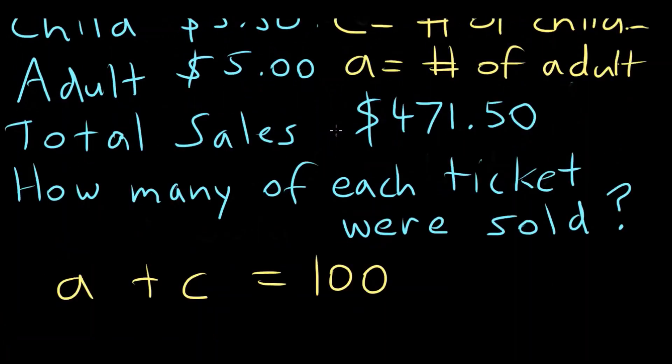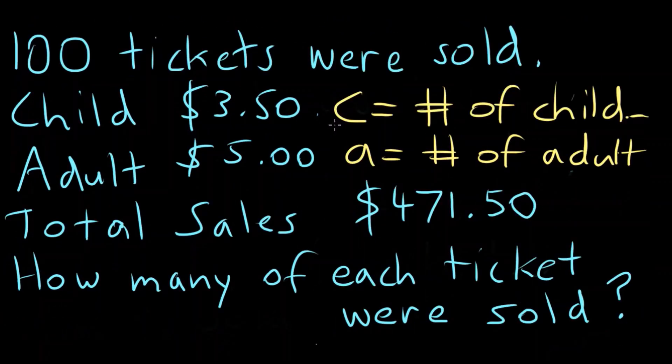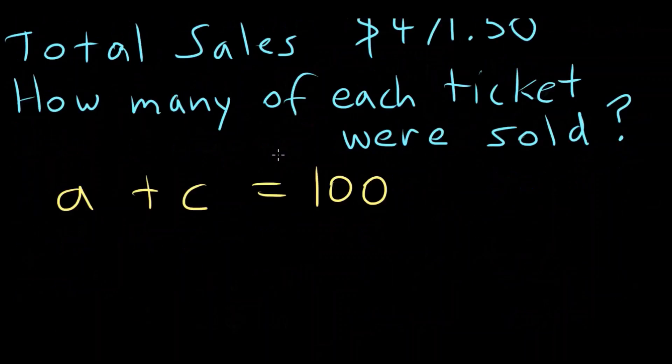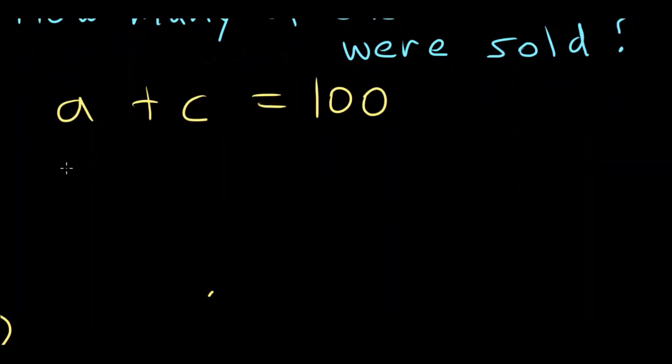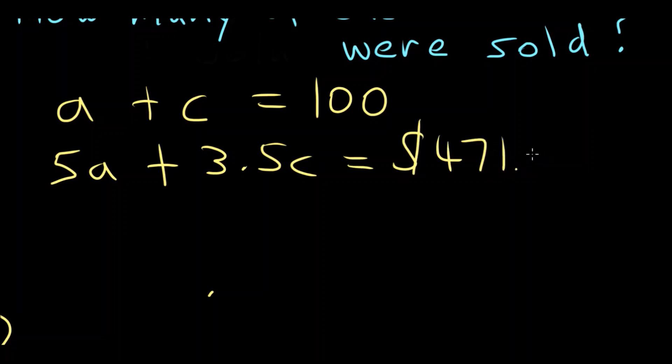Now what else do we know? We know that each child ticket is $3.50, each adult is $5.00 and the total sales is $471.00. So couldn't we also say that $5.00 for each adult ticket, A is the number of adults, plus $3.50 for each child ticket would equal our total value $471.50. We can solve that using substitution.